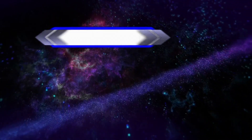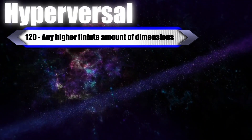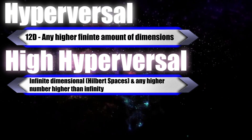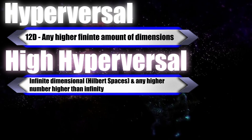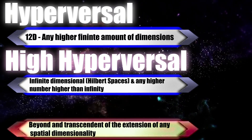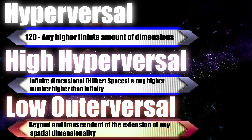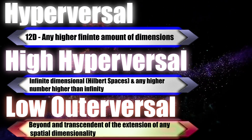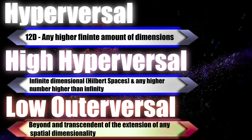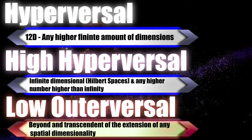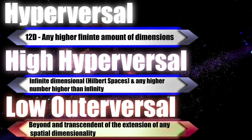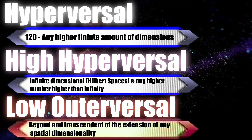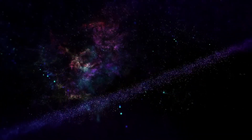People often refer to 12 dimensions or any other finite number higher as hyperversal. Infinite dimensions and beyond is known as high hyperversal. We can extend this dimensional difference principle to any extent we like, and objects or spaces that go completely beyond any extent of dimensions are called low outerversal. The difference between low outerversal and high hyperversal is actually bigger than the difference between a 3D object and a high hyperversal one — to give you an idea of how impressive this is. Despite popular belief, you can't simply reach the tier of low outerversal by stacking infinite dimensions on top of each other, as low outerversal is beyond the restrictions of dimensionality in total.